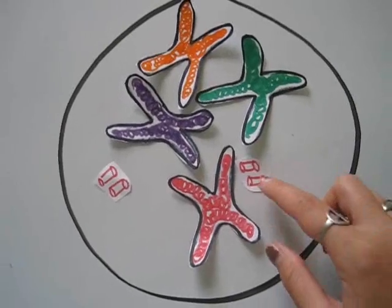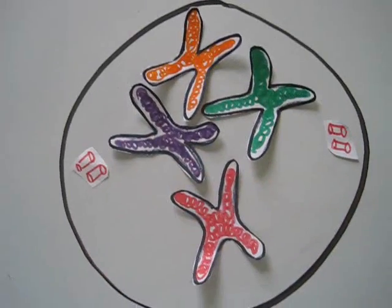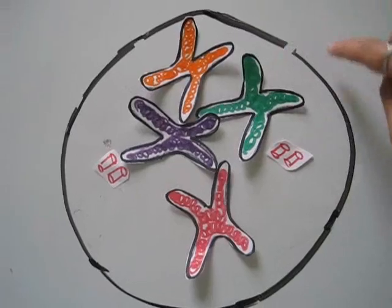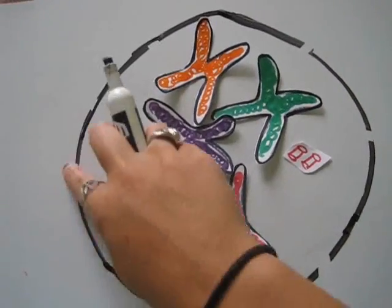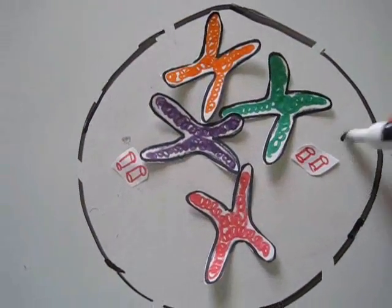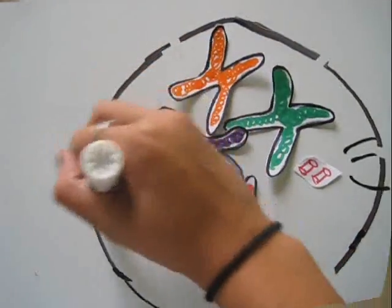The centrioles start to migrate to their opposite poles. In prophase, the nuclear membrane starts to break down and spindle fibers begin to form.